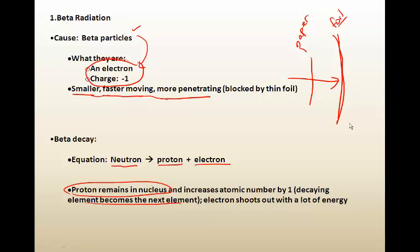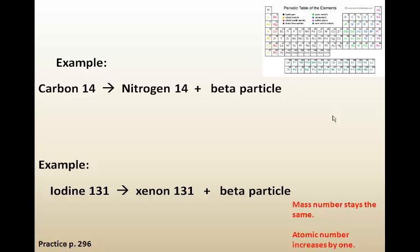Beta decay occurs when a neutron breaks down or decays into a proton and an electron. And as you know, electrons weigh almost nothing. But what this does to the atom where the decay is taking place is it gives it one more proton. And that means that it becomes the next element on the periodic table. The electron shoots out of the nucleus or shoots out of the atom. And it takes with it a lot of energy. And that's basically the nature of these rays that are produced. That is actually the electron stream as they leave the nucleus.